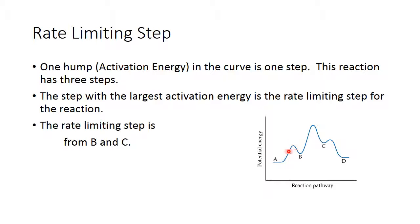Each activation energy — each little hump — represents one step in the reaction. If I look at this particular reaction profile, I would see there is one activation energy, two activation energies, three activation energies. So this particular reaction has three steps in its mechanism. The intermediate energies are: intermediate energy, high energy, very low energy. The rate-limiting step is from B to the top of the largest hump — the largest energy difference of the three choices. It has nothing to do with how high it gets overall, but rather the distance from one place to the very top.